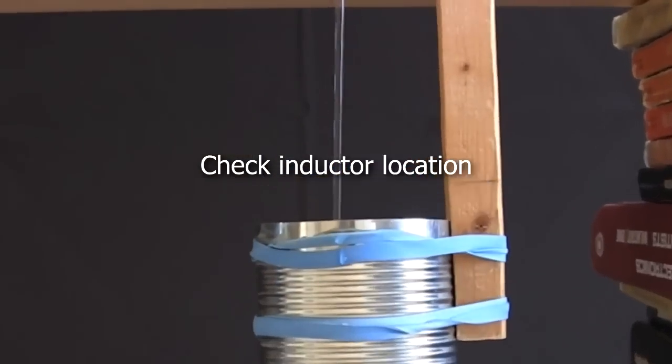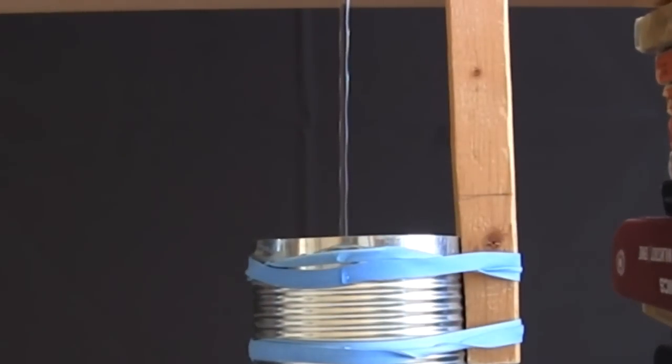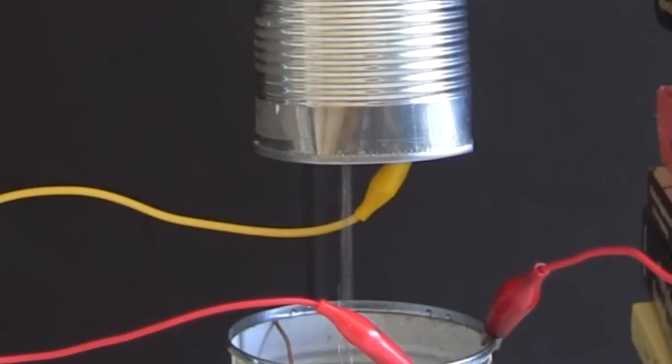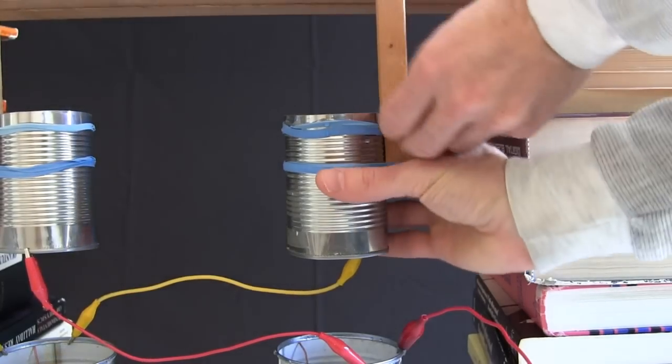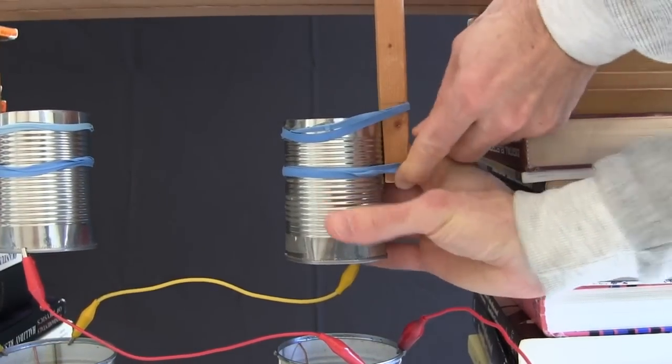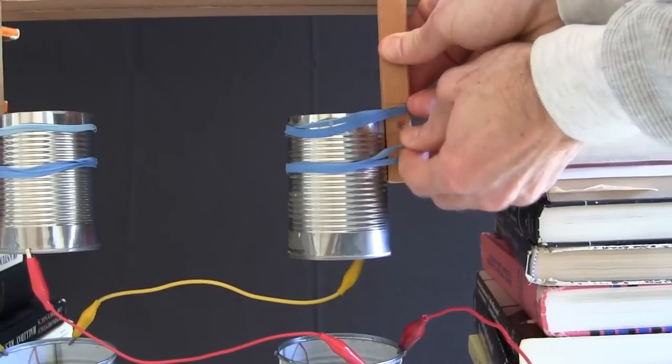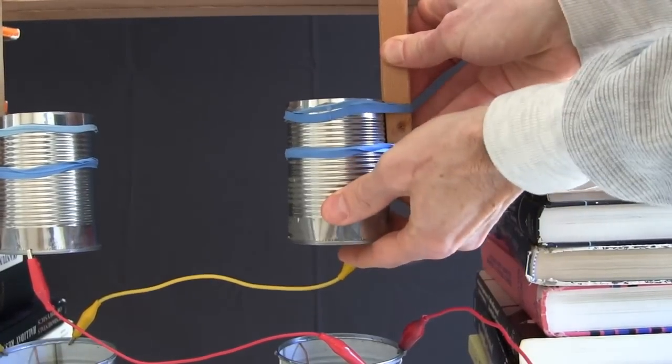The water entering the inductor should be a solid, smooth stream. And the water leaving it should look turbulent, even though it's really individual drops. If that's not the case, reposition your inductors so that it is. Here's how I would adjust them if needed. But my inductors were in a good place, so I didn't need to do this.